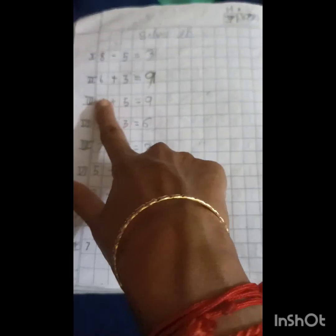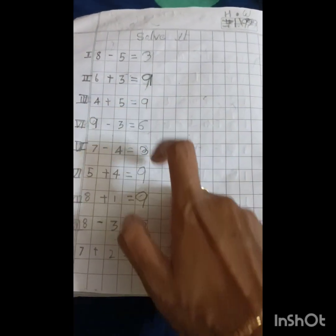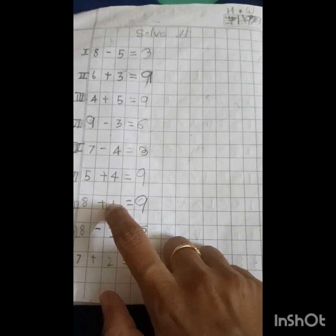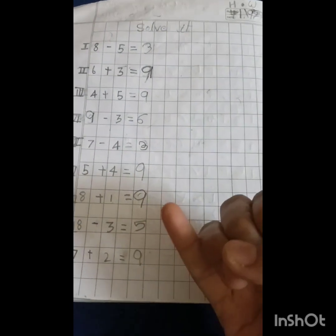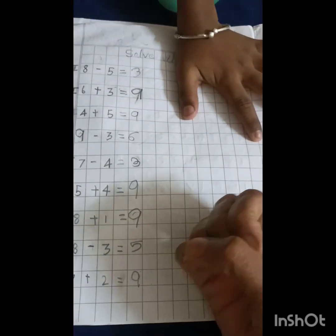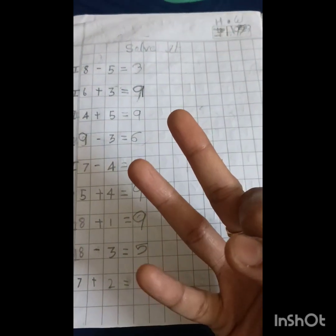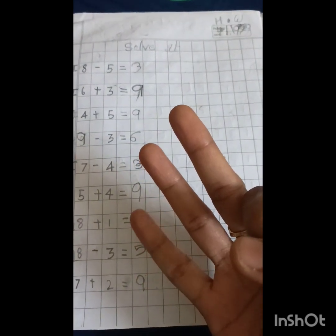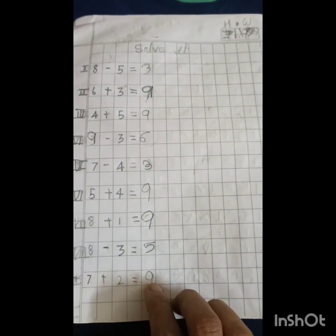5 plus 4 and 4 plus 5 is same. You should put the same answer. 8 plus 1 equal to. The next number to 8 is 9. That's all. The answer is 9. 8 minus 3. 8 in the mind and 3 in ants. You should go in reverse. Sorry. 7, 6, 5. The answer is 5.